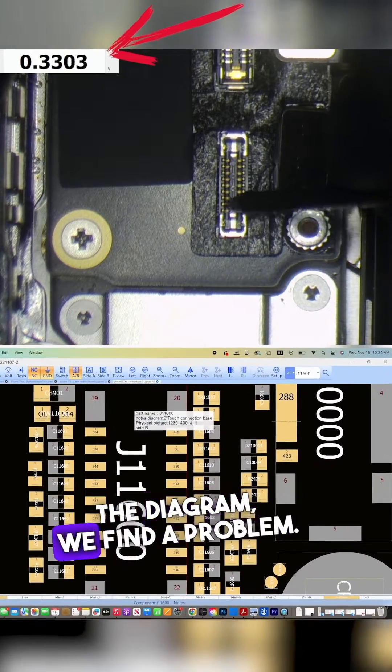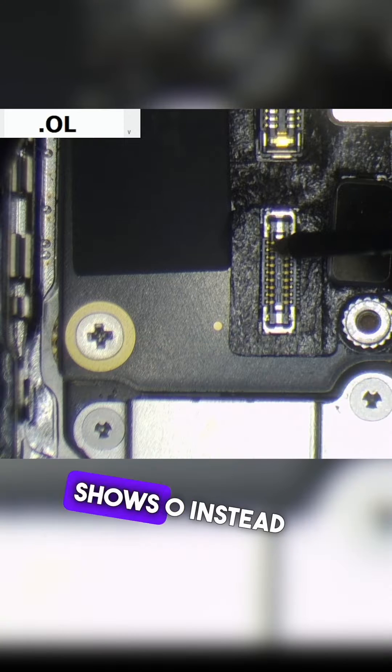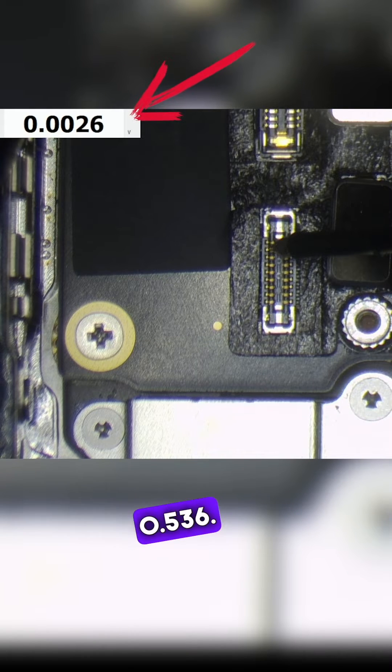Comparing our readings with the diagram, we find a problem. All readings match except for pin number 3, which unexpectedly shows 0 instead of the expected 0.536.